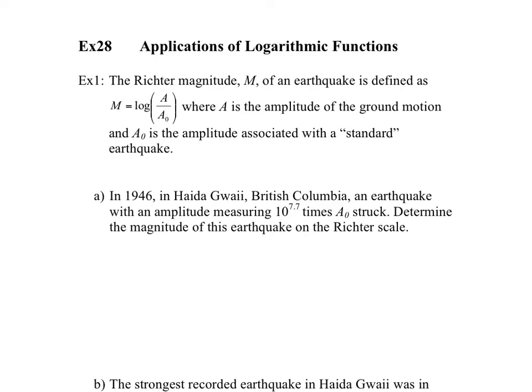Here's a good example. The Richter magnitude — the Richter scale that you know of, so when you hear of an earthquake being like a 3.5 or a 7.2 — it's actually a logarithmic scale. So the Richter magnitude m is defined by this formula: log of a over a0, where a is the amplitude of the ground motion, and a0 is the amplitude associated with a standard earthquake.